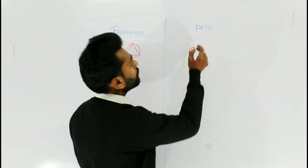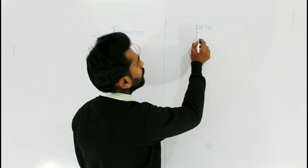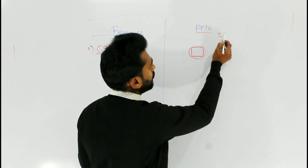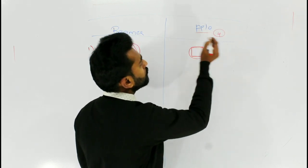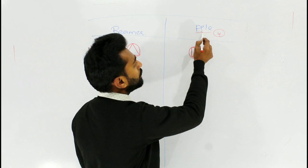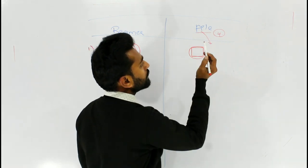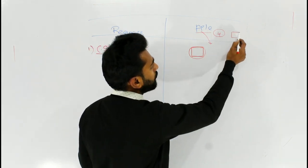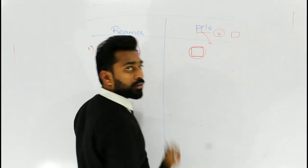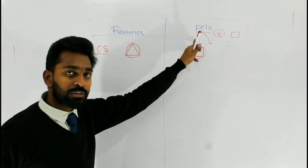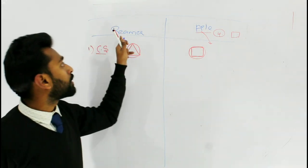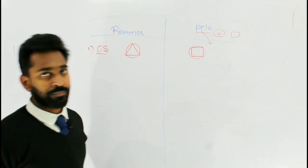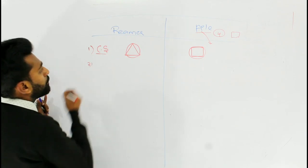Just for remembering — if you consider the word 'file', it has four letters. So remember, a file has four letters, that means four sides, either a square or rectangle. If you remember that about the file, you won't confuse about the cross section of the reamer.